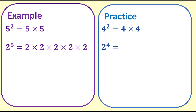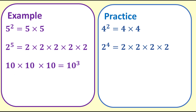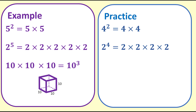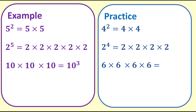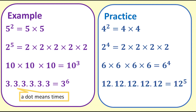2 to the power of 4 is 2 times 2 times 2 times 2 — in other words, 2 multiplied 4 times. Now going the other way: 10 times 10 times 10 is 10 to the power of 3, also known as 10 cubed. Your turn: 6 times 6 times 6 times 6 times 6 equals 6 to the power of 4. Now 3·3·3·3·3·3·3 is equivalent to 3 to the power of 6. A dot is another way to write times. So 12·12·12·12·12 is another way of writing 12 to the power of 5.